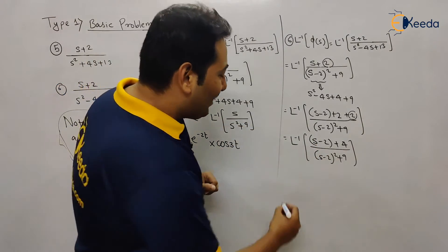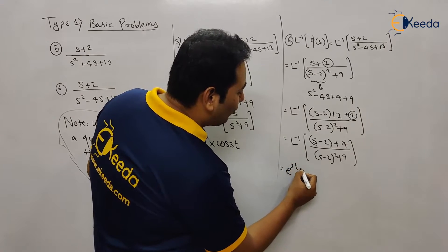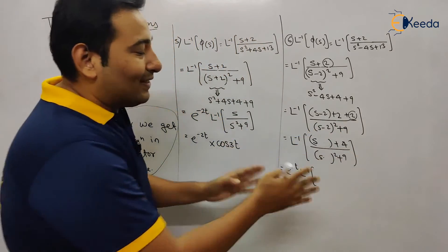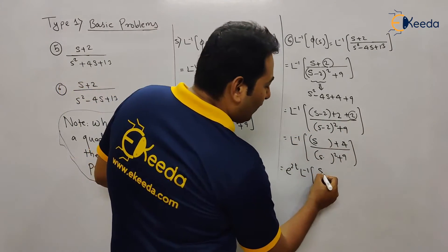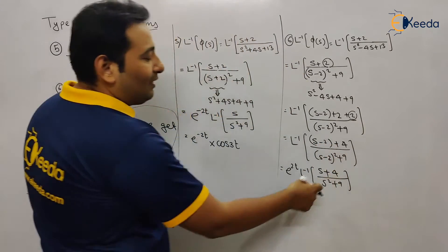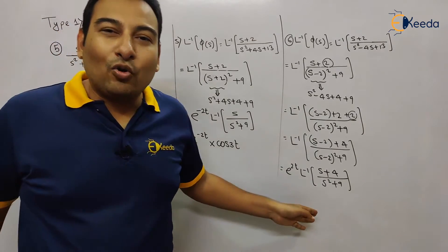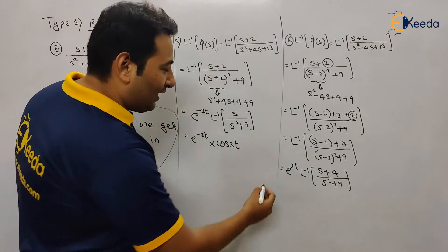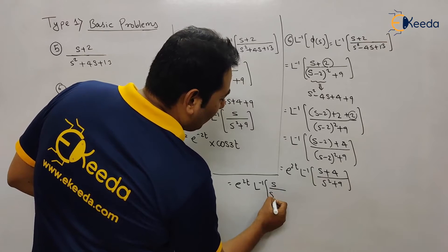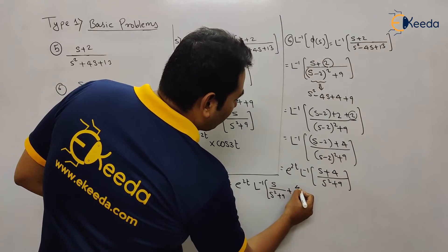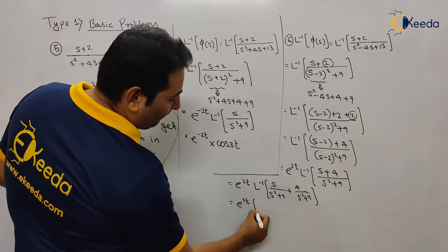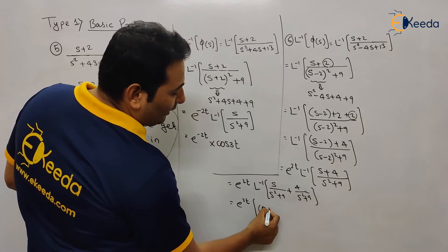Now you can see the shifting — minus 2 — so because of −2, e^(2t) is taken outside. Laplace inverse: forget about the shifting and write it down as you see it. So you have s+4 upon s²+9. This can be written as e^(2t) times Laplace inverse of s/(s²+9) plus 4/(s²+9). Now, s/(s²+9) is cos(3t).